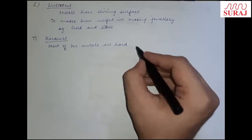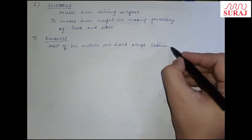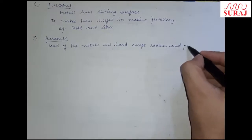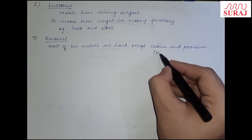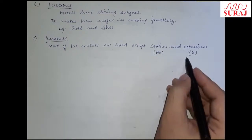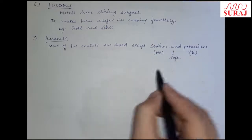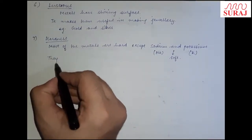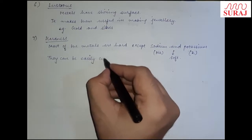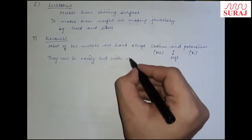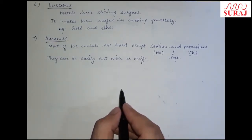But some metals are soft — except sodium and potassium. Sodium का symbol Na होता है, potassium का symbol K है. Sodium और potassium hard नहीं होते, यह soft होते हैं। They can be easily cut with a knife — एक knife से उनको easily cut कर सकते हैं, इतने soft होते हैं।